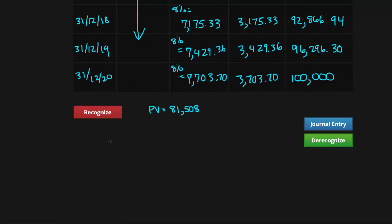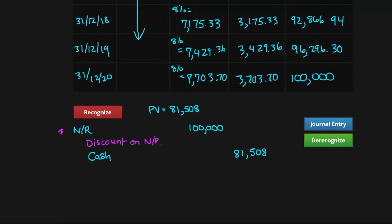A different way to account for this is to use a contra asset account known as discount on notes receivable. We know that we gave up cash of eighty-one thousand five hundred and eight. What's going to be different with this method is that we're going to report the note receivable at face value, which is one hundred thousand. You might be saying this doesn't make sense because we can't report this note receivable at a hundred thousand — that's overstating your asset. And you would be completely correct, which is why we're going to use that contra account called discount on note receivable.